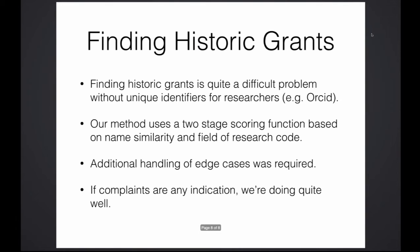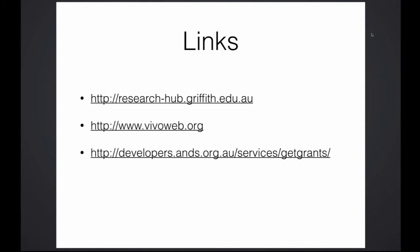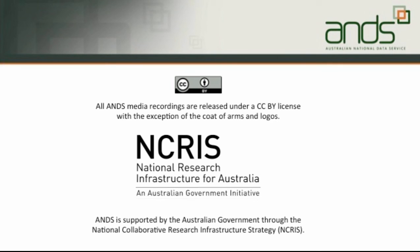To wrap it up, I've put up some links to the systems involved. The first is our Research Hub. The second, for those who may not know about it, is the Vivo project, which is definitely worth a look for everyone interested in researcher profile systems. And the last one is the documentation for the ANS API — and since it's based on SOLR, there are a lot of additional resources available on the web. That's all from me.